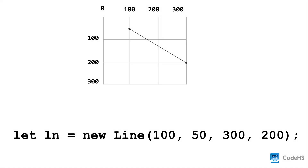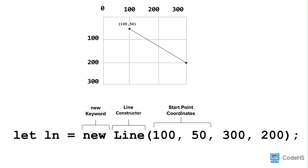Finally, let's try adding a line to the canvas. To create a line, we write the new keyword and the Line constructor. Between the parentheses, we write the x and y starting points — which in this case is 150 — and the x and y ending points, which is 300 and 200. And to be able to refer to the line, we will store it in a variable.